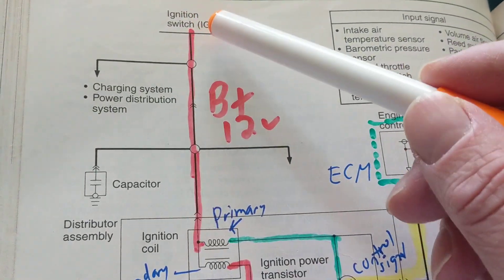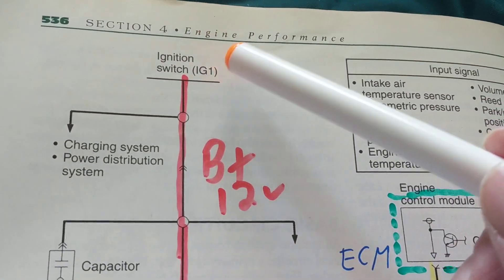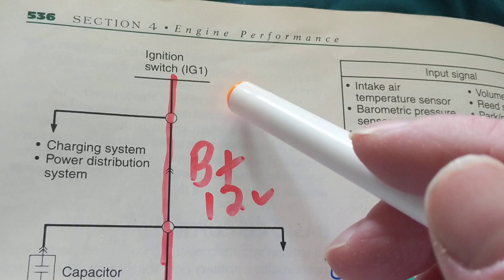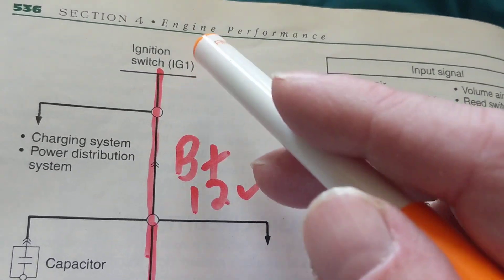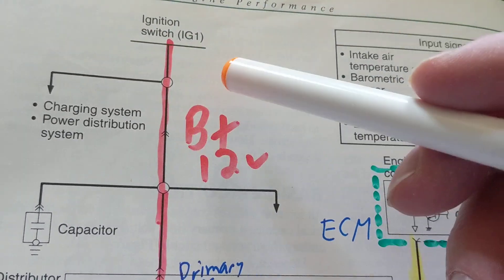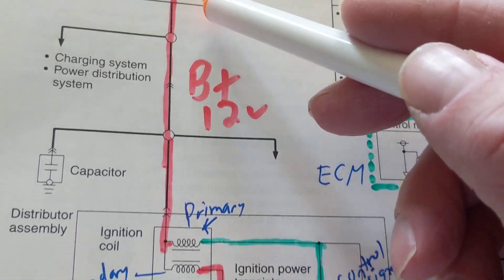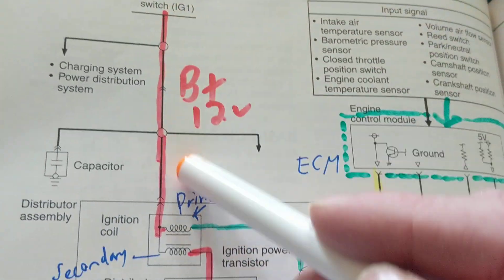Now when you see over here, you see the charging system from the ignition switch. When it comes to schematics, it's not going to show you the fuses or the B pluses—you have to infer from it or analyze where this is coming from.